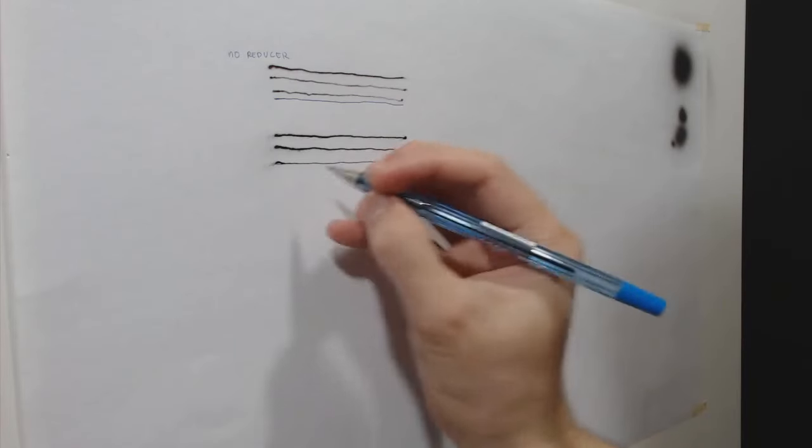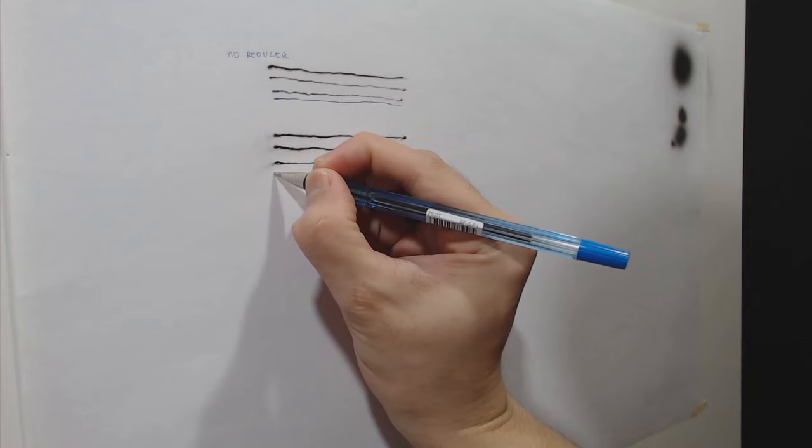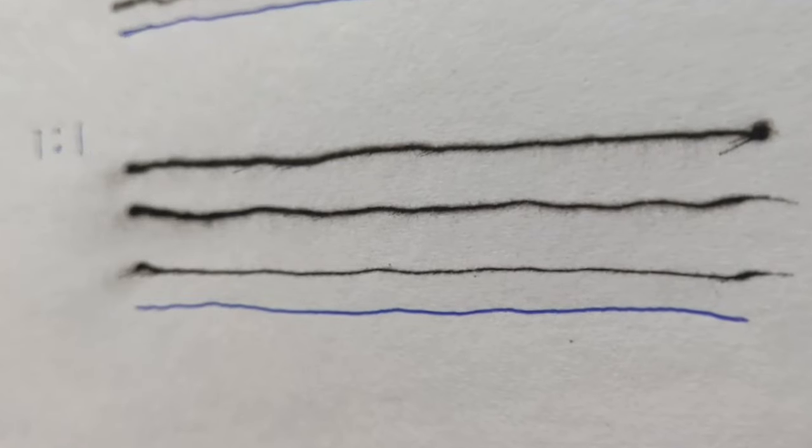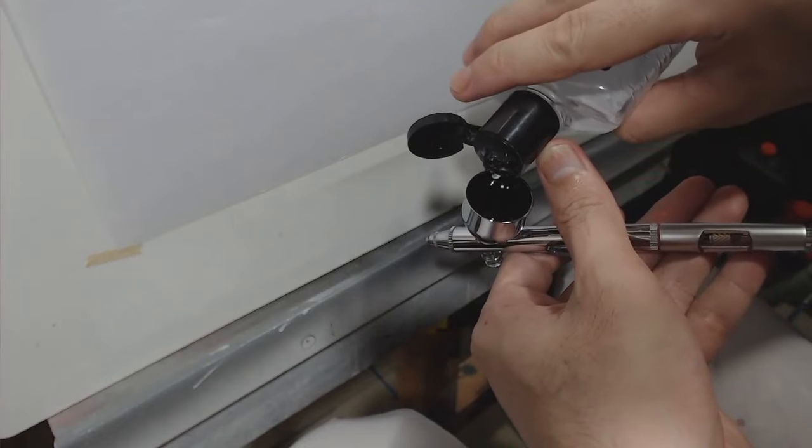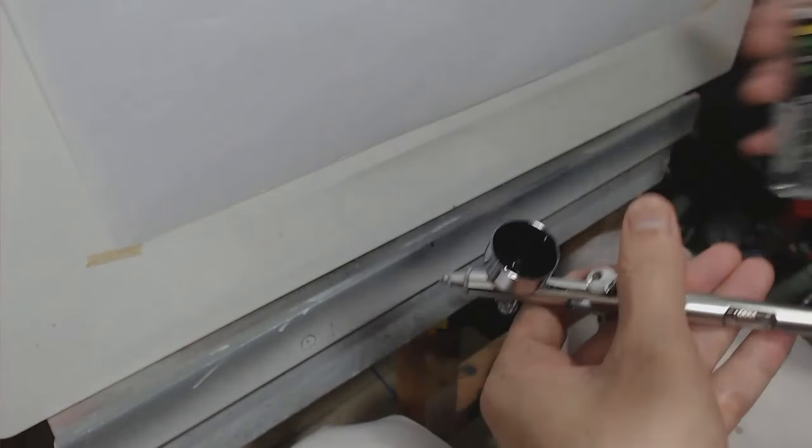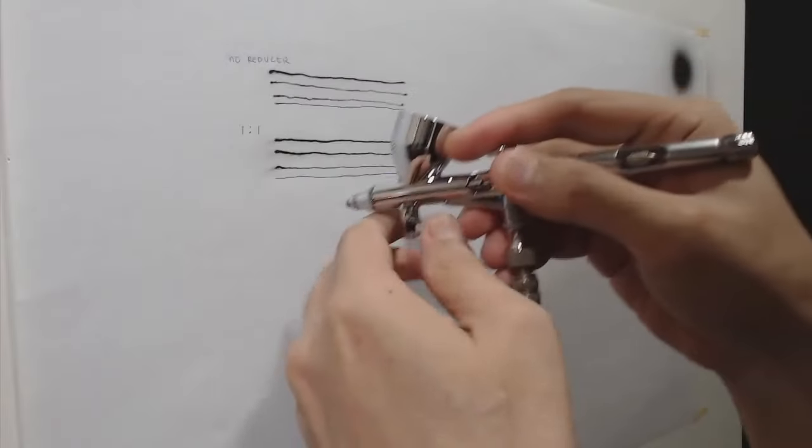As you can see, although the lines have improved, this is still not the result that we want. Now let's just repeat the process. I'm going to add another four drops of water. So this now adds approximately one-to-two ratio.